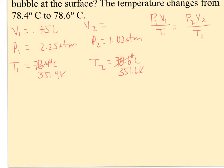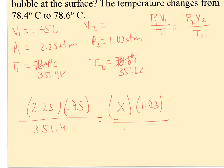So when I plug in P1, I've got 2.25 times V1, 0.75 over T1, 351.4 equals V2, this is my X or my unknown, times P2. I guess it should be P2 first, but in math magic that doesn't matter. So 1.03 times X and T2, 351.6.